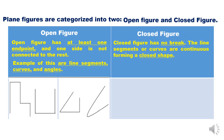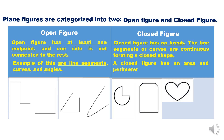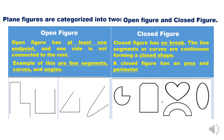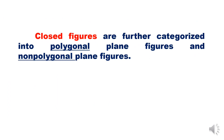A closed figure has no break — the line segments or curves are continuous, forming a closed shape. A closed figure has an area and perimeter. Closed figures are further categorized into polygonal plane figures and non-polygonal plane figures.